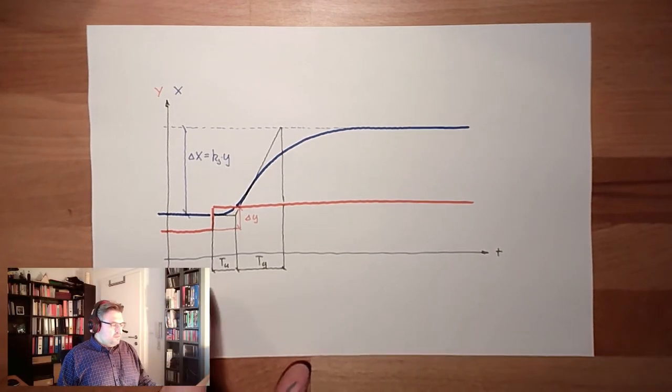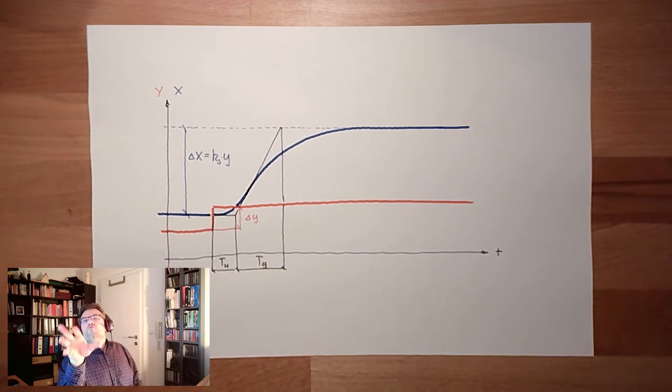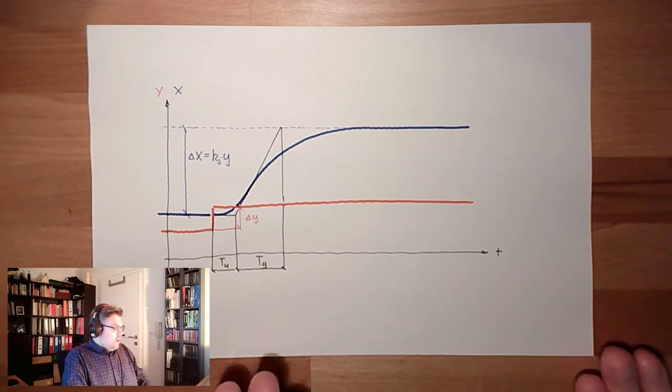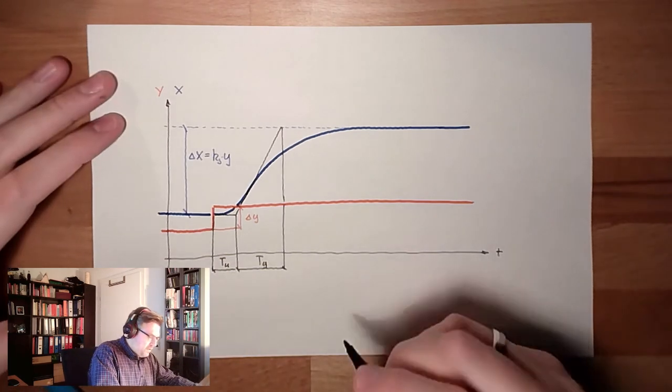We've done this, especially with Tu and Tg. If you remember, we've done this when we analyze the system—if it's controllable or good controllable or hard controllable. It's exactly the same. So we end up with three different parameters.